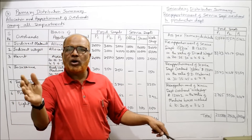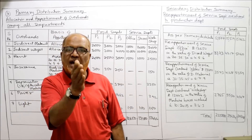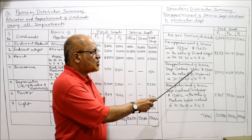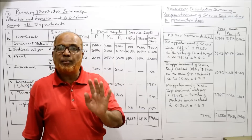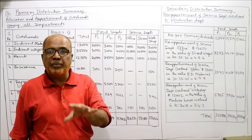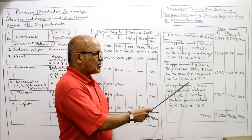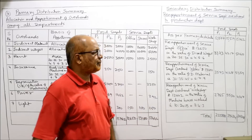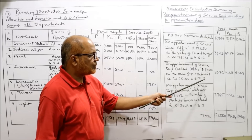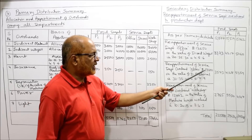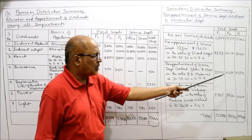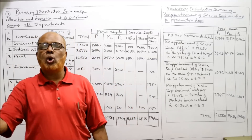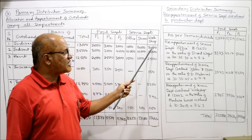Second service department: Stores, with a total of 13,100. Stores is where materials are kept, so it is reapportioned in the ratio of direct material. Direct materials are 30,000:35,000:45,000, simplified to 6:7:9 (total 22). So 13,100 × 6/22 = 3,573, × 7/22 gives the P2 share, × 9/22 = 5,359. Stores department overheads are now transferred to P1, P2, P3.